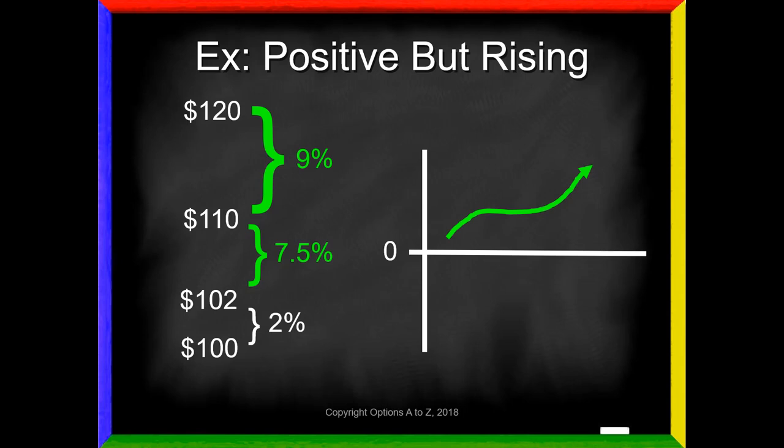The opposite happens when you have increasing prices at an increasing rate. Let's say we go from 100 to 102 to 110 to 120 — still increasing, and the rate of those changes is also increasing. We went from 2% to 7.5% to 9%; the percentage changes are getting bigger. So your graph is going to be above zero because prices are rising, and the rate of change is increasing. We would say that momentum is increasing.